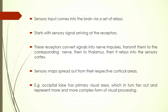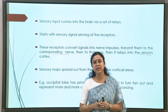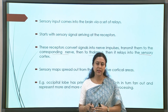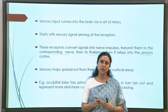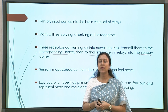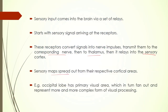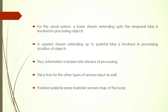Sensory input works as follows: there are signals received at the lowest end, then transmitted through various corresponding nerves to the thalamus and finally into the sensory cortex. For example, when we touch a rough surface versus a smooth surface, the difference in tactile sensation goes to our brain via this kind of network. There are sensory maps in the brain that come from their respective cortical areas depending on the kind of sensory input we get. The occipital lobe has a primary visual area that expands to include more complex forms of visual processing.